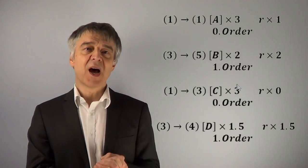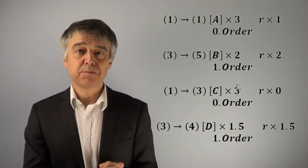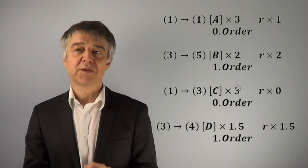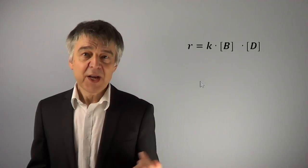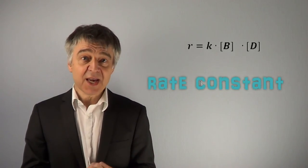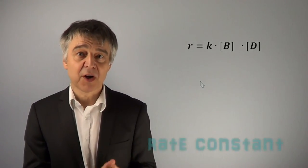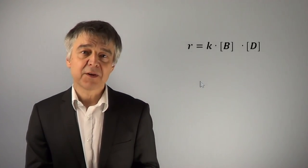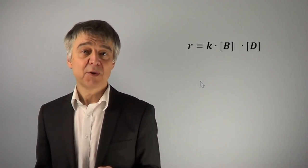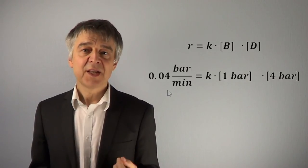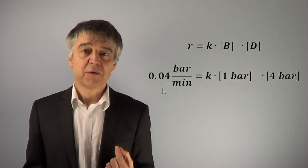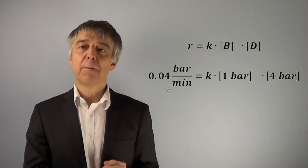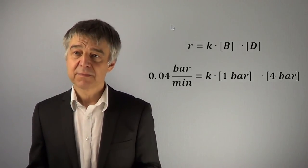Overall, the rate law of the reaction will be R equals K times concentration of B times concentration of D. The rate constant K can be determined by plugging in the combination of initial concentrations and initial rate of reaction of any experiment. We obtain 0.041 per bar and minute.